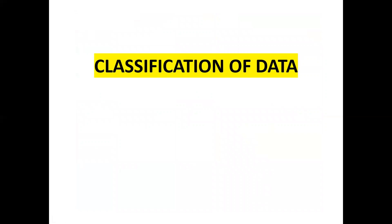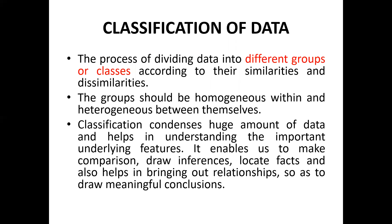The third step is classification of data. Classification is the process of dividing data into different groups or classes, through frequency distribution or other basic characteristics. These groups should be homogeneous within themselves and heterogeneous between themselves — for example, males are homogeneous within, but male and female are heterogeneous between themselves. Classification condenses a huge amount of data and helps in understanding important underlying features, enabling comparison and drawing inferences.